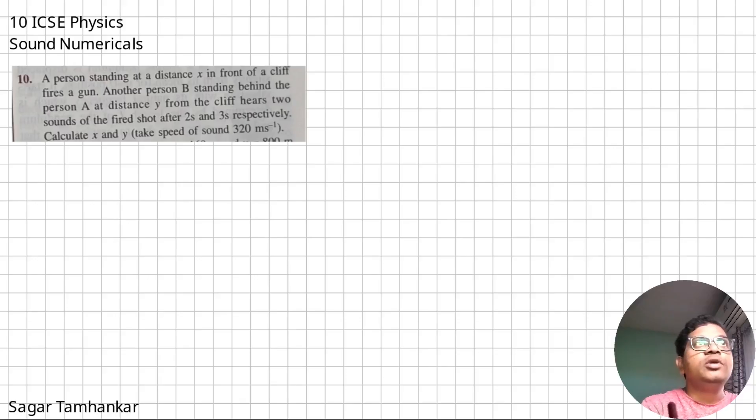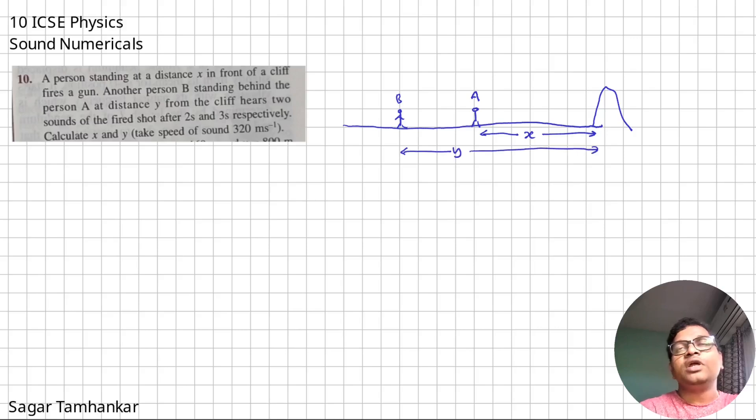Let's move to the next question. The information provided over here, there are two people. This is person A, and there is person B. There is a cliff. So what it says that a person standing at a distance of x in front of the cliff. So let me take this distance as x. Another person B standing behind person A at a distance y from the cliff. So this distance is y from the cliff. Now the person A fires a shot. So when this person is firing the shot, the sound is traveling in both directions.